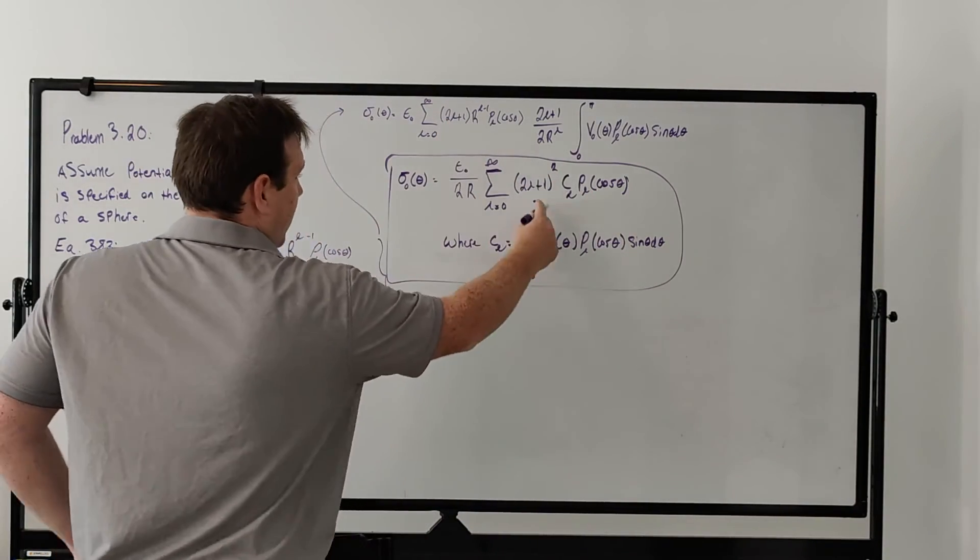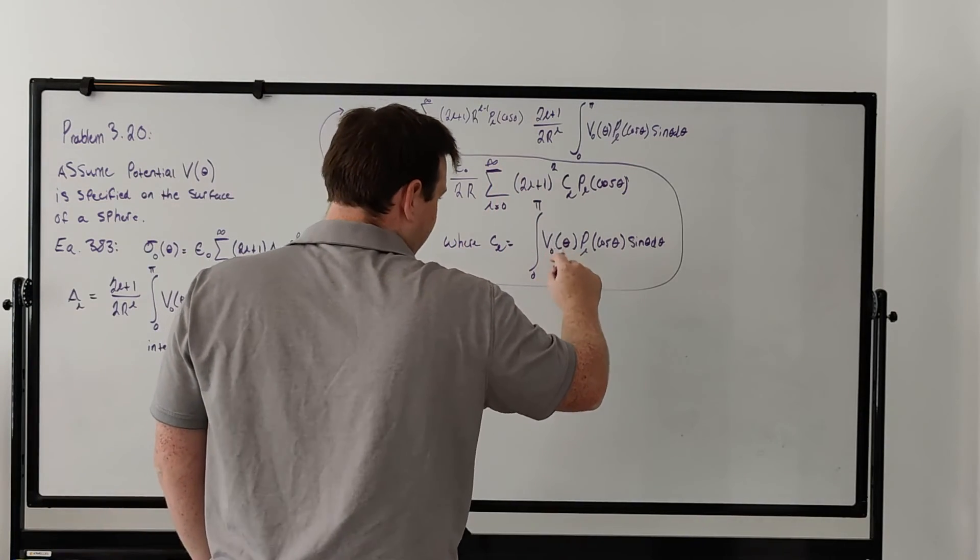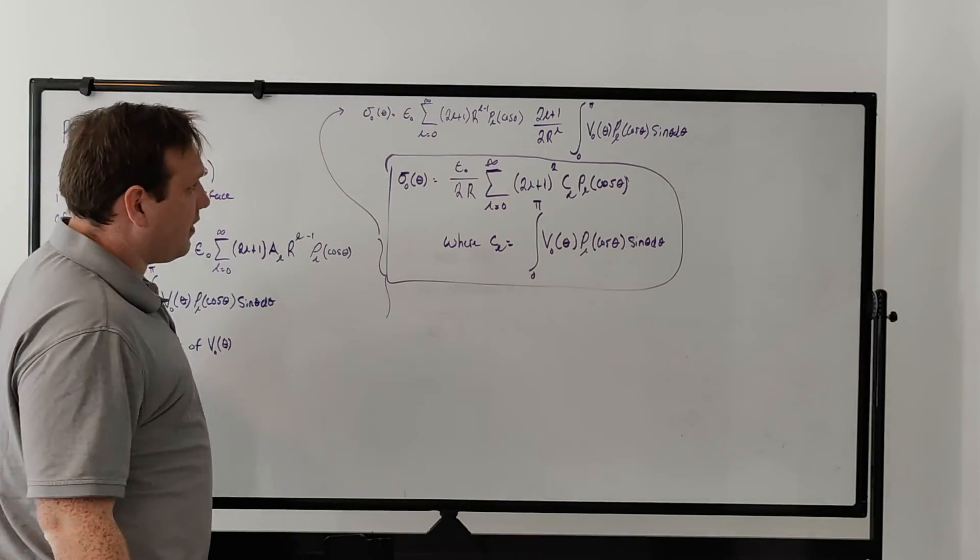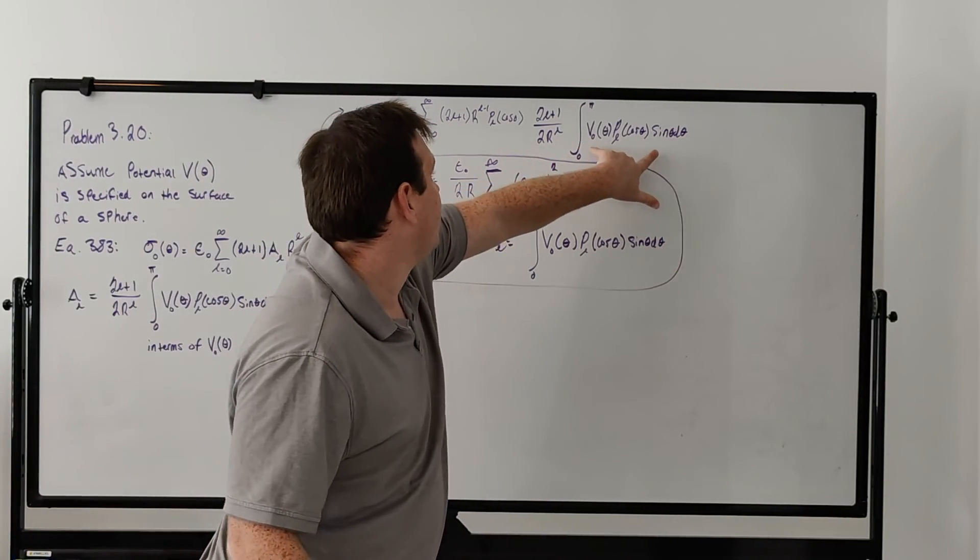Then we have P_L from here, and C_L is just defined as the integral of V₀(θ), that's our known potential, and then P_L(cos θ), so that's just the rest of this, essentially.